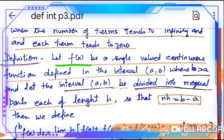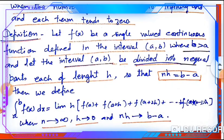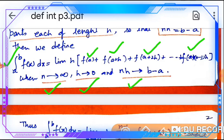Definition: Let f(x) be a single-valued continuous function defined in the interval [a, b], where b is greater than a, and let the interval [a, b] be divided into n equal parts each of length h, so that nh = b − a. Here b is the upper limit and a is the lower limit. Then we define the integration from a to b of f(x) dx as equal to the limit of h into [f(a) + f(a+h) + f(a+2h) + ... + f(a+(n-1)h)], when n tends to infinity, h tends to zero, and nh tends to b − a.